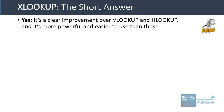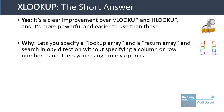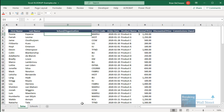The short answer on XLOOKUP is that it is a clear improvement over VLOOKUP and HLOOKUP — more powerful and easier to use. It lets you specify a lookup array and a return array, search in any direction without having to specify a column or row number, and modify many options. Let's go into Excel and see how this works.